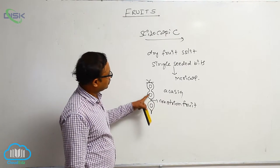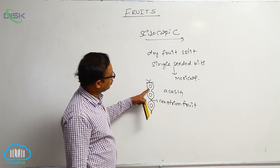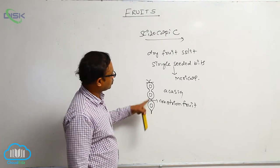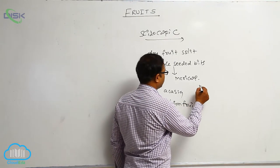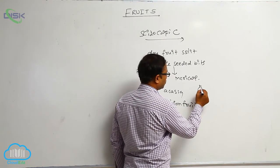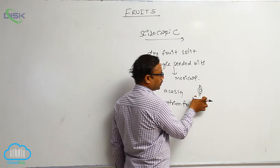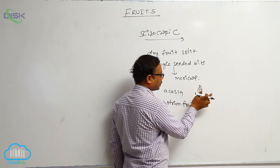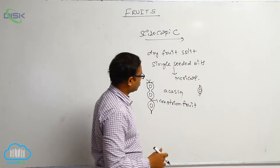At the constriction, fruit is split into single seeded bits. That is known as the mericarp. This is known as the mericarp. After degeneration of pericarp, seeds are liberated. That is why they are known as the schizocarpic.